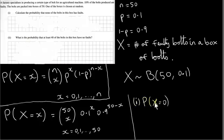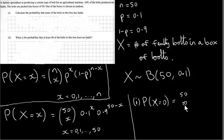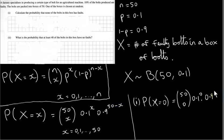In part 1, we want the probability that X equals 0 — the probability that none of the bolts in the box is faulty. X is the number of faulty bolts and we want X to be 0. So we just plug 0 into the formula, giving 50C0 times 0.1 to the power of 0 times 0.9 to the power of 50 minus 0. Since 50 minus 0 is just 50, this simplifies to 0.9 to the power of 50.